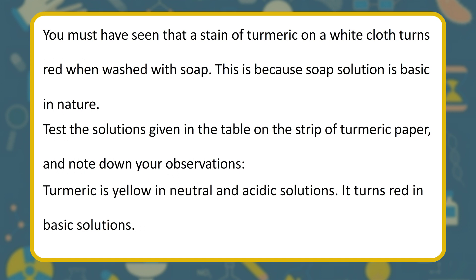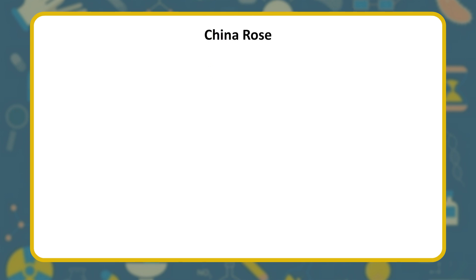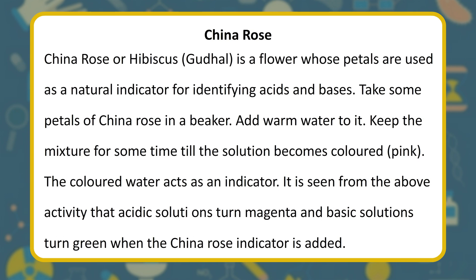China rose (hibiscus) petals are used as a natural indicator for identifying acids and bases. Take some petals of china rose in a beaker, add warm water, and keep the mixture for some time until the solution becomes colored pink. The colored water acts as an indicator. Acidic solutions turn magenta and basic solutions turn green when the china rose indicator is added.